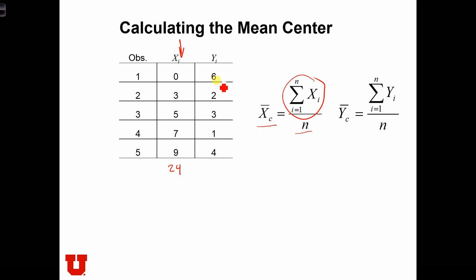And the sum of the y's: 8, 9, 10, 11, 12, 16. So xc is equal to 24 over 5, which is equal to 4.8. And yc is equal to 16 over 5, which equals 3.2.